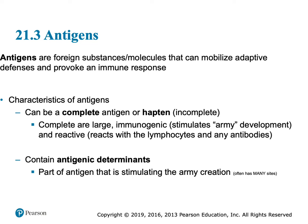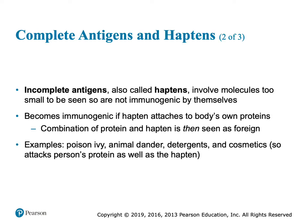A complete antigen has little parts — a little marker on it, a site called an antigenic determinant, that stimulates the B cell to create an army. Some antigens don't invoke a response all by themselves — some have to bind to your body first. For example, poison ivy hanging out by itself is not going to invoke a response. But some of poison ivy's molecules bind to some of your body's proteins, and then your body goes 'hey, you're not supposed to be here,' and it invokes a response to create immunity.